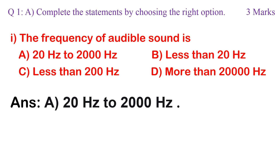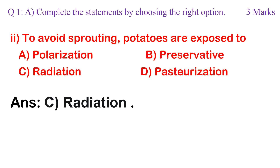Question 2: To avoid sprouting, potatoes are exposed to: a. polarization, b. preservative, c. radiation, d. pasteurization. Correct option is c. radiation.